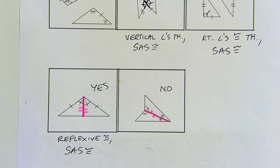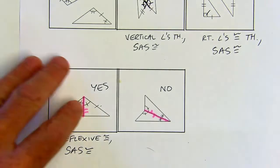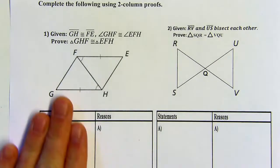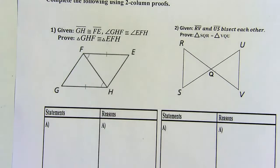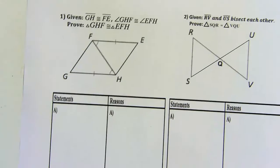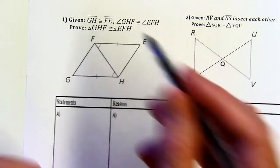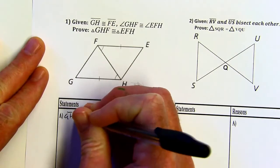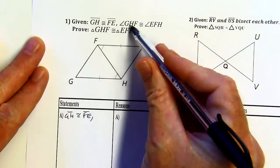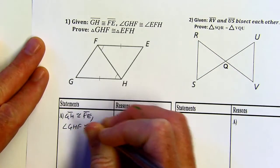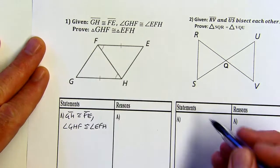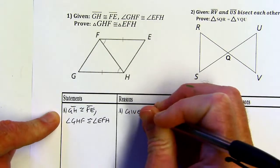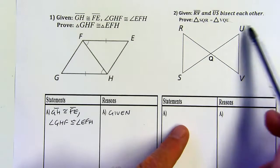Let's try doing some two-column proofs with what we know. The left column is going to be my statements and the right column is where I justify my statements with reasons. In this first problem, I've got my given information. Before I even think through the problem, I just copy the given info right into statement A — that GH is congruent to FE and angle GHF is congruent to angle EFH — and my reason is simply: given. I'll do the same for the second proof: RV and US bisect each other — given.